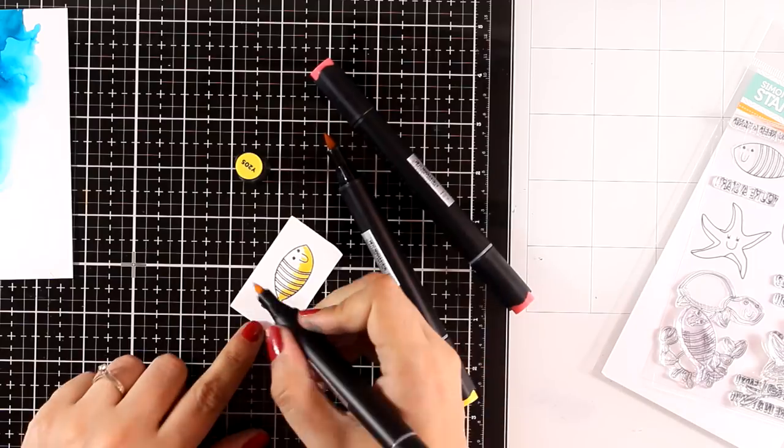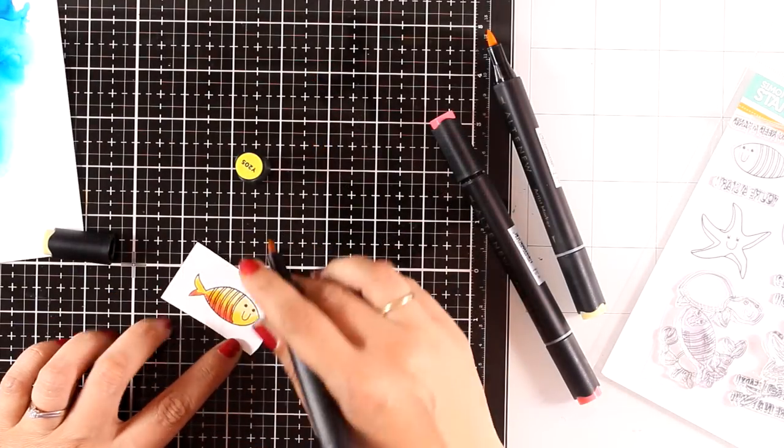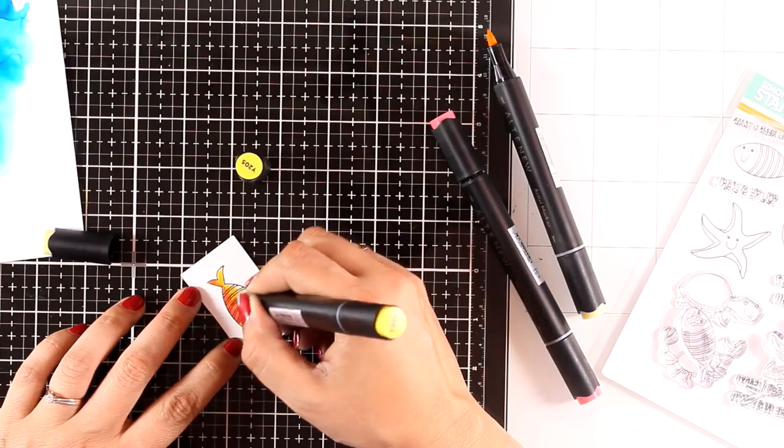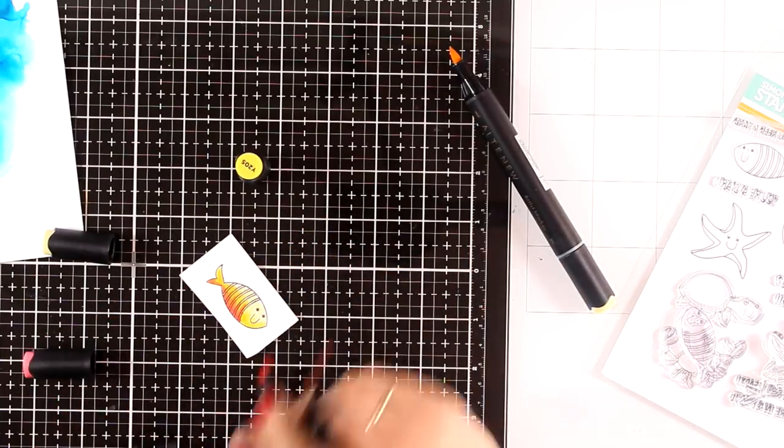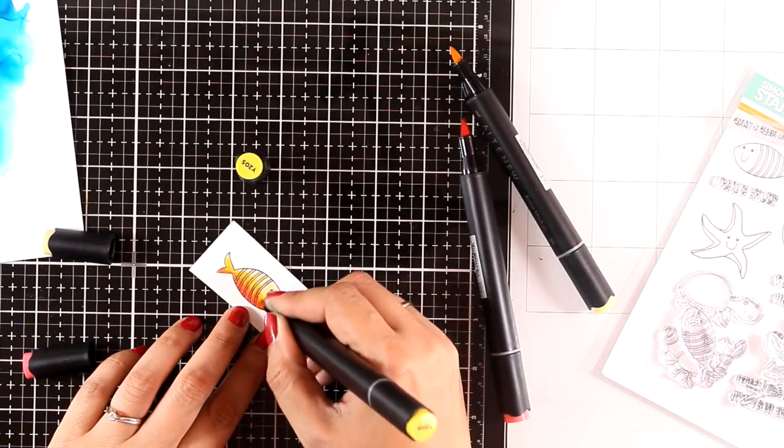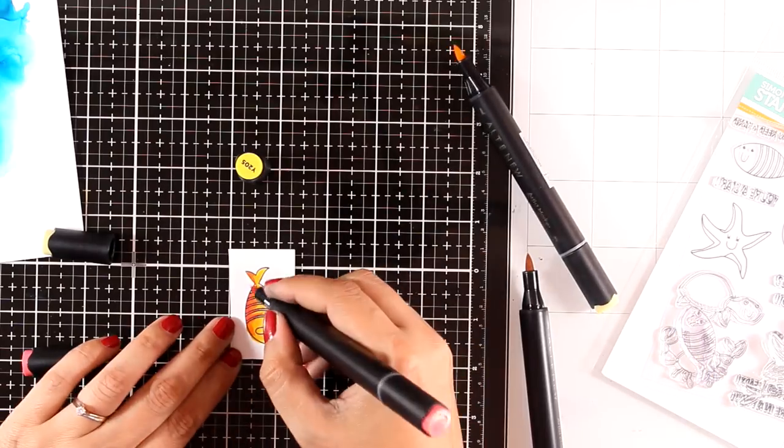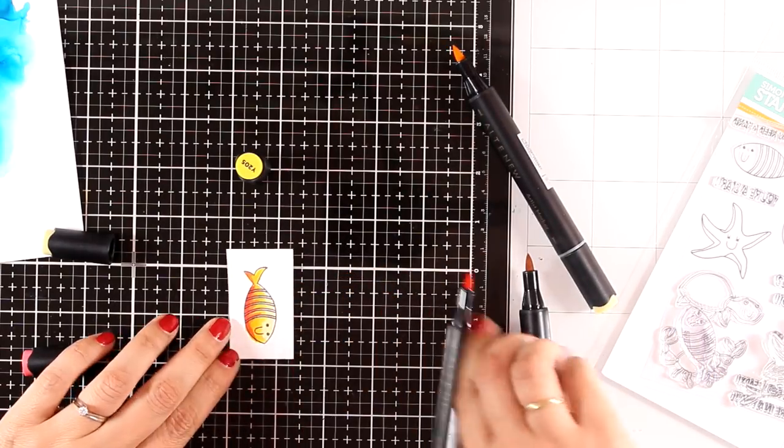So for the fish I used yellows and oranges, for the octopus I used pinks and purples, and for the whale I used greens and yellows. Now it doesn't have to be realistic, this is just a card, so just go ahead and use any color that you like as long as they contrast with the background.